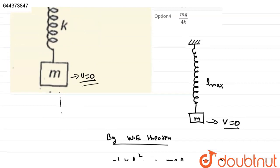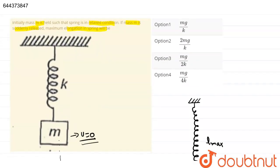Thus, from the given options, 2Mg upon K, option 2 will be correct.